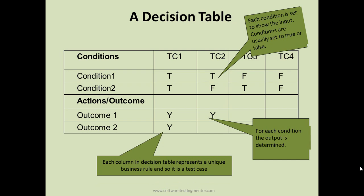Each column in a decision table represents a unique business rule, and therefore it is a test case. With two conditions, there are four different combinations, resulting in four test cases: Test Case 1, Test Case 2, Test Case 3, and Test Case 4.